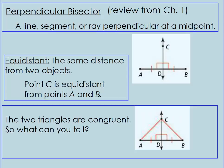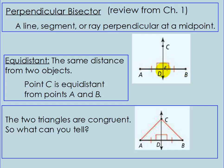So just a little bit of review. What's a perpendicular bisector? We did this in chapter 1. It's a line segment or ray that's perpendicular at a midpoint. For example, CD would be the perpendicular bisector of AB because it bisects into two equal parts and D is the midpoint. We have this other concept in this chapter: equidistant. It means something is the same distance from two other objects. Point D would be equidistant to points B and A because it's the midpoint — the same distance away from B as it is away from A.